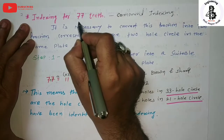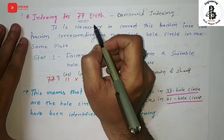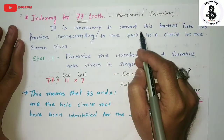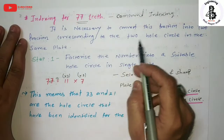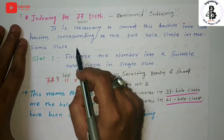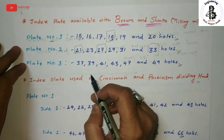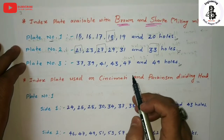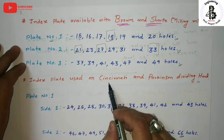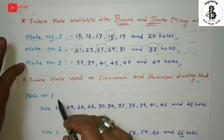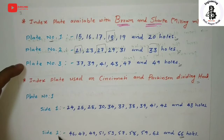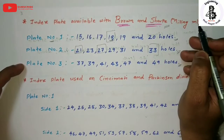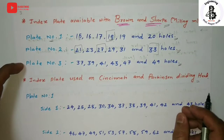Here is a given example: 77 teeth are required for the indexing problem. It is necessary to convert these fractions into two fractions corresponding to two hole circles in the same plate. We have to select a plate which has two matching fractions. The standard plates available are Brown and Sharp plate numbers 1, 2, 3, and 4, and Cincinnati and Parkinson dividing head plate number 1 with two different sides. Generally more focus is on the Brown and Sharp system.